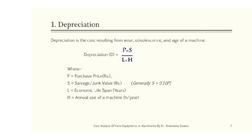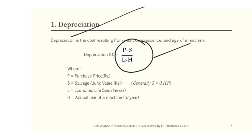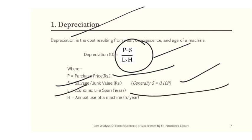Depreciation is the cost resulting from wear, obsolescence, and age of a machine. The rate of depreciation depends upon the length of useful life of the machinery, and it is determined by the formula: (P − S) / (L × H), where P is the purchase price of the machinery in rupees, S is the salvage or junk value in rupees (generally 10% of the purchase price), L is the economic lifespan of machinery in years, and H is the annual use of the machine in hours per year.